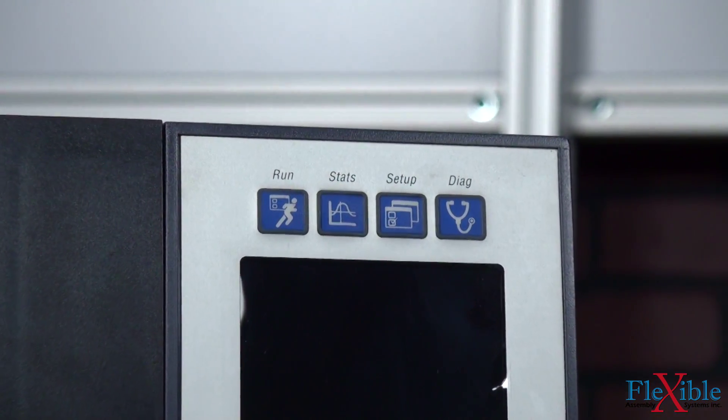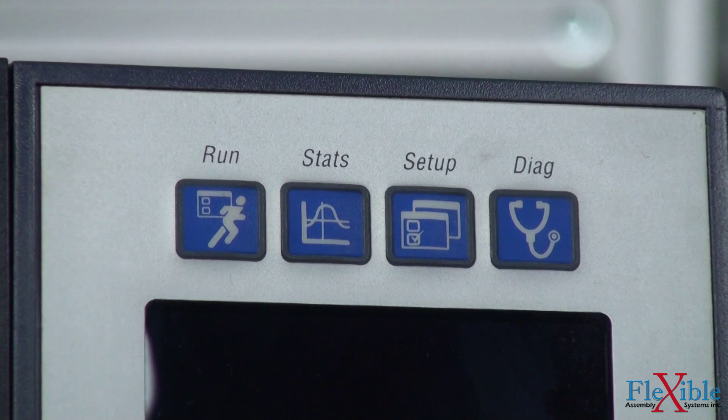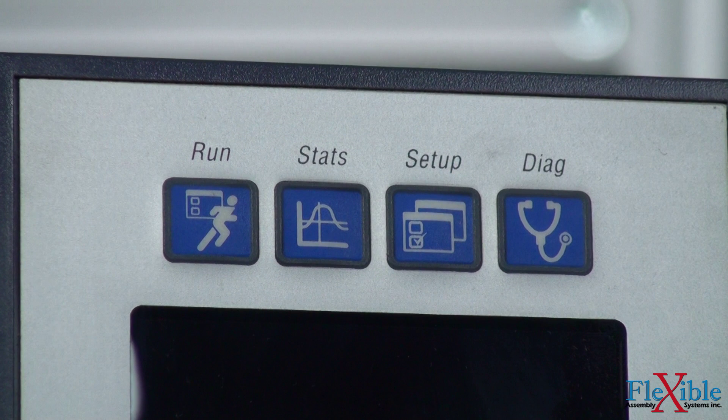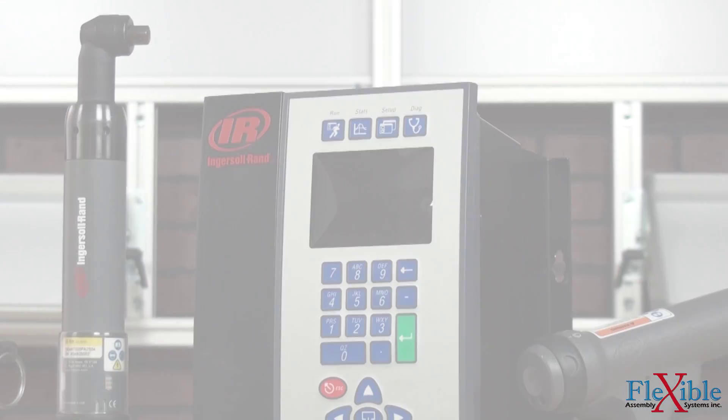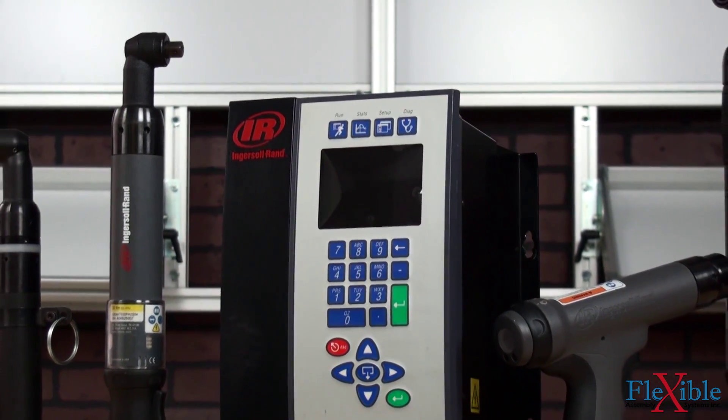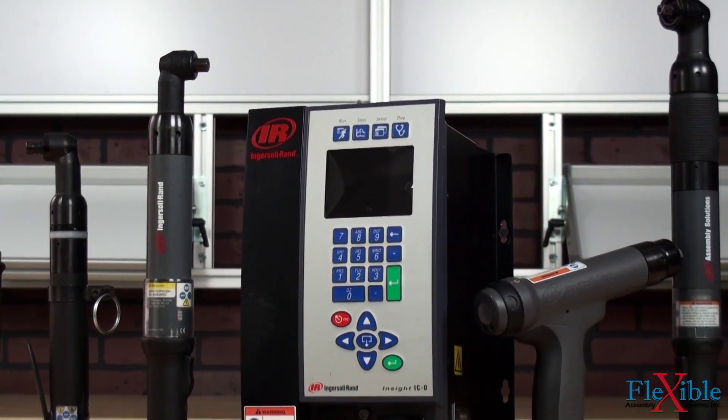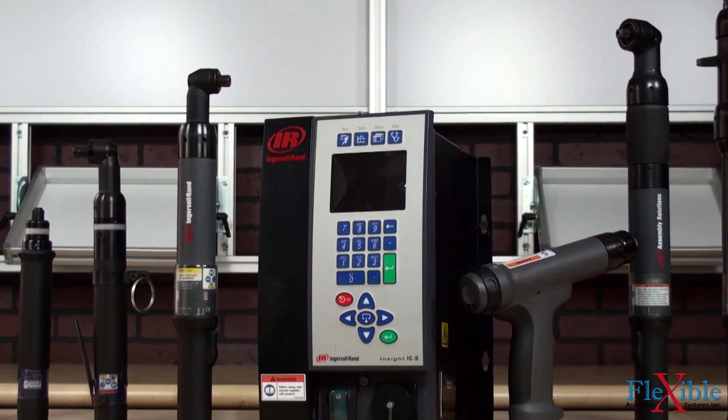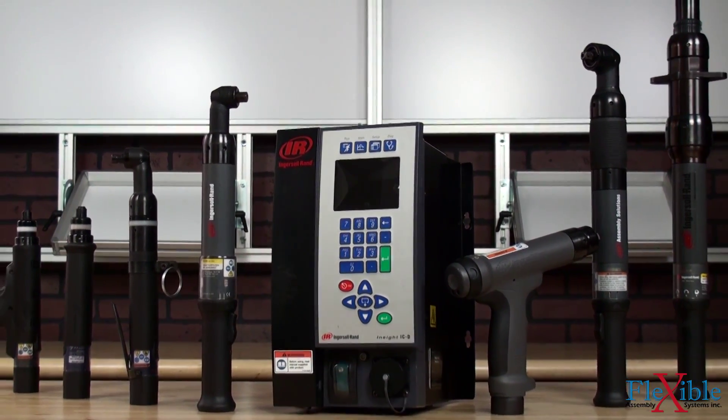Convenient menu buttons are located above the display for fastening run data, statistics, setup, and controller diagnostics. Up to 256 fastening strategy parameter sets can be stored internally along with 1,000 cycles of end of run data on ICD models.